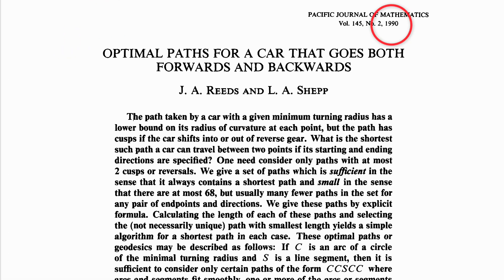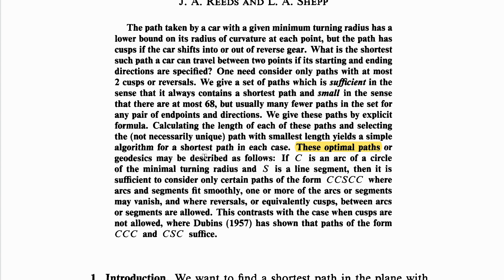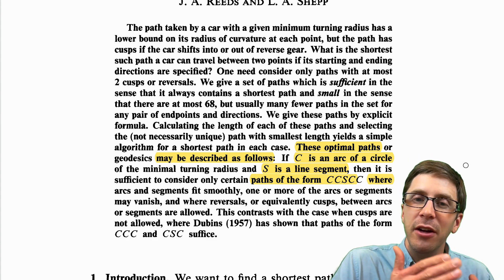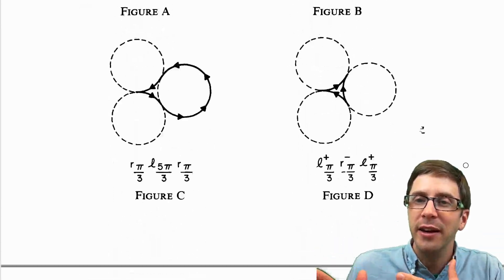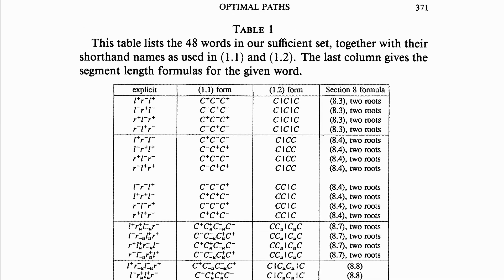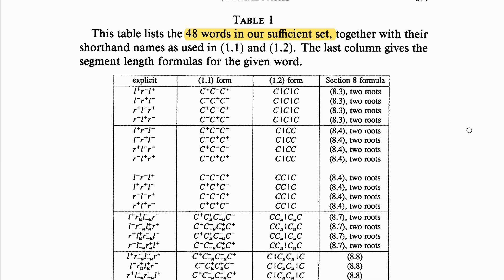Back in 1990, Reeds and Shep proved that the shortest path consists of no more than five segments, where in each segment u is either negative 1 over R-min, 0, or 1 over R-min, which means the car is always either turning hard left, going straight, or turning hard right, and the car is moving either forwards or backwards. The optimal path is one of 48 different path types.